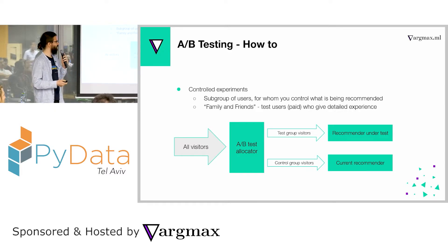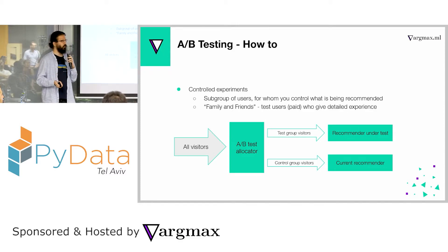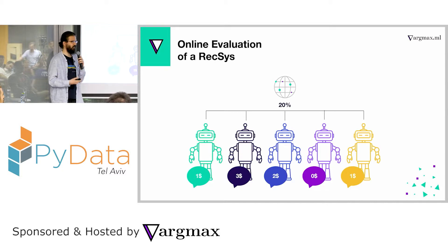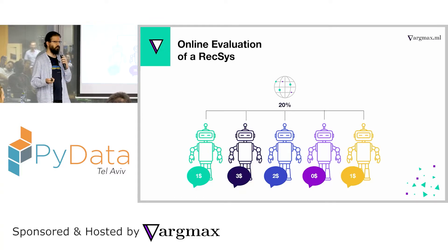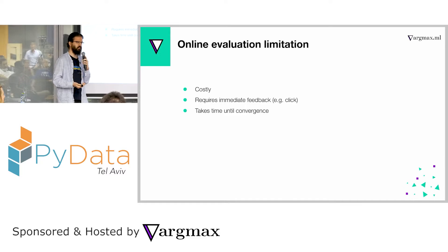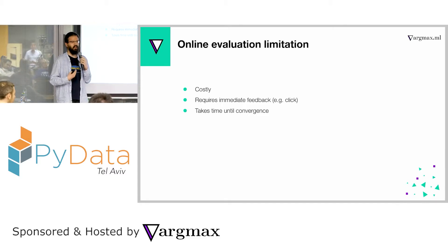Another option is the more expensive family and friends approach, where we pay users more money for detailed evaluation of the model. You can of course run several tests at the same time — showing models A, B, C, D — where model E is the baseline currently in production. Both A/B testing and family-and-friends testing have the problem that they are costly, either because we're paying users for their time or because we're paying for A/B testing platforms. It also takes a lot of time to gather all the data, and we have to plan the tests accordingly.